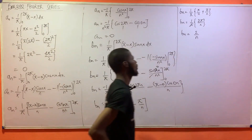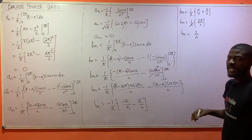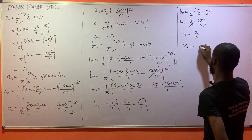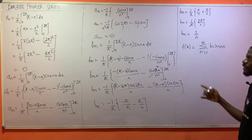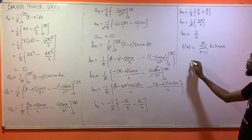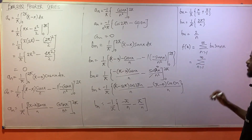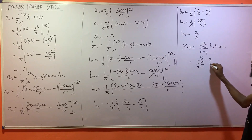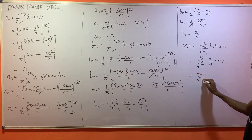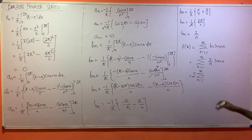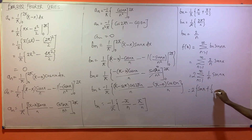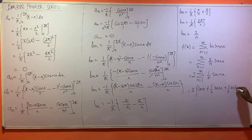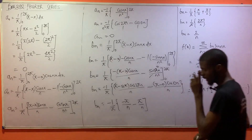So bₙ = 2/n. Since a₀ and aₙ are both zero, the Fourier series is f(x) = Σ_{n=1}^∞ (2/n) sin(nx) = 2[sin(x) + (1/2)sin(2x) + (1/3)sin(3x) + ...]. That is the Fourier series for f(x) = π − x.